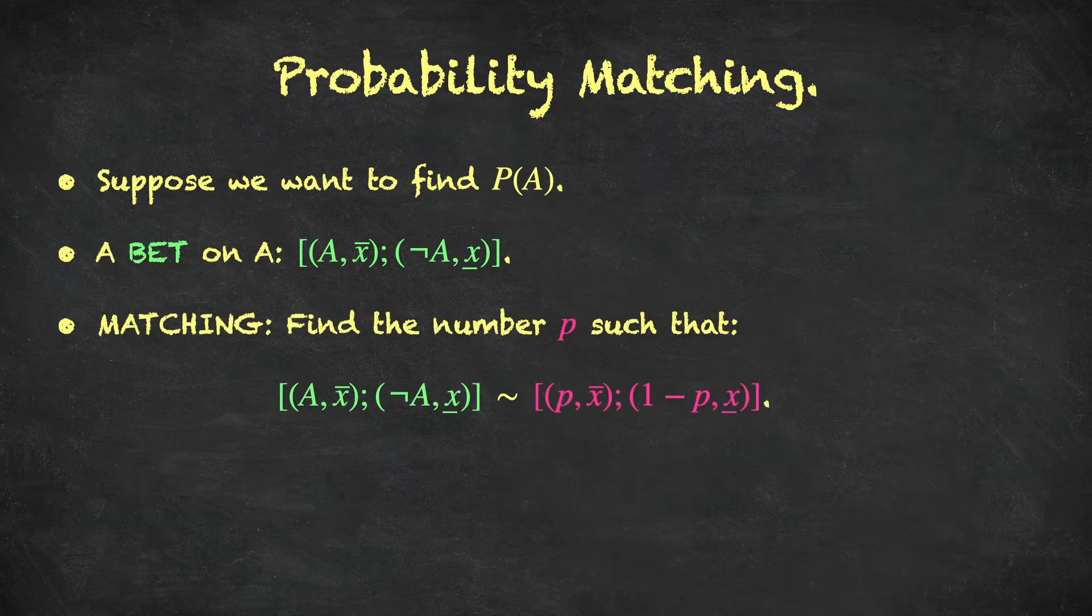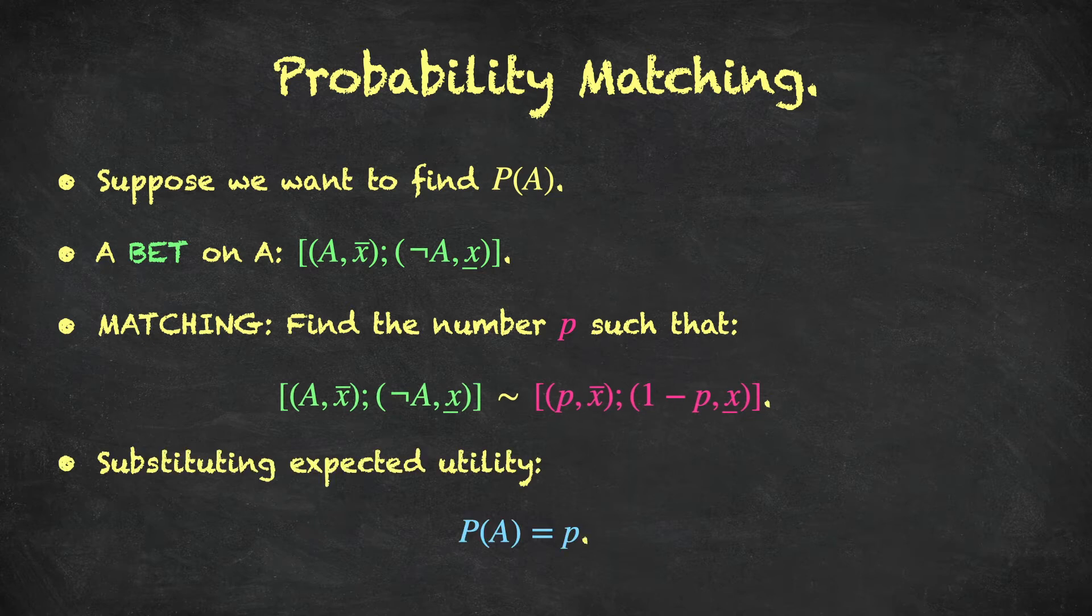Now, for the matching procedure, what we're essentially going to do is match in terms of preferences, so find an indifference. We're looking for a gamble, an objective lottery, with probability P assigned to the best outcome, such that the decision maker is indifferent between the uncertain bet on the event A and the lottery which assigns probability P to the best outcome. So notice that if we substitute expected utility, the probability capital A will be precisely equal to P. So whenever we want to find the value that this probability measure, capital P, assigns to any particular event, then we construct a bet based on that event and then match it through an indifference to an objectively risky gamble and then take the probability attached to the best outcome in that gamble as the value of the probability measure.